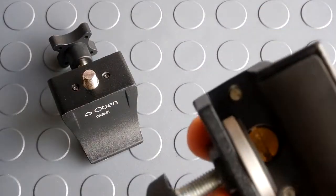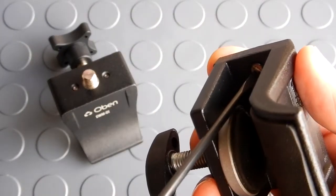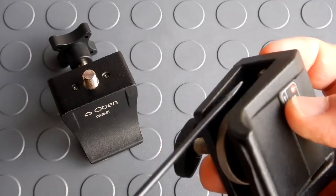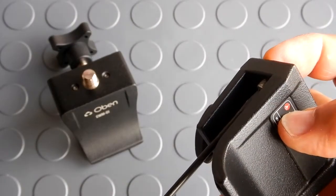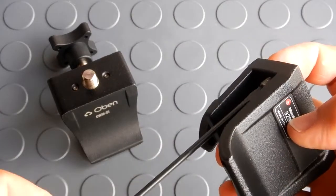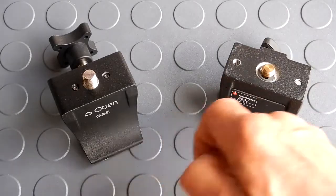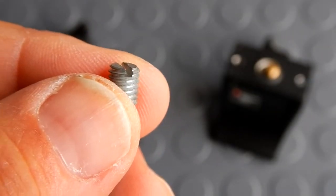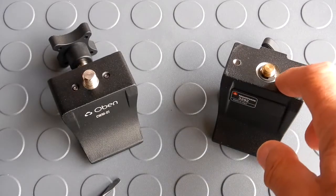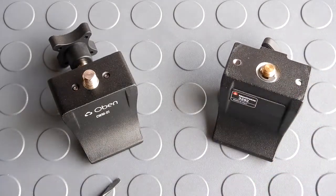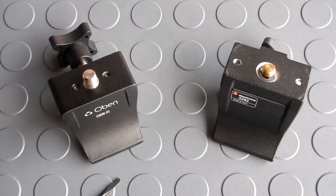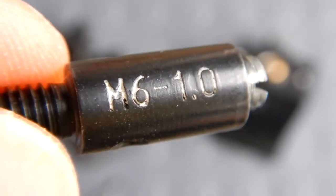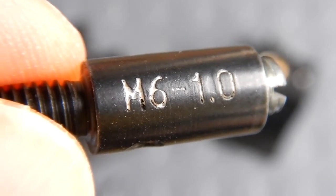The Manfrotto on the other hand uses a slotted screw in which you have to use a screwdriver like this. And I gotta tell you, if I ever had the opportunity where I had a ball head that was big enough, I would definitely change this to the allen head socket cap screws - much easier to use. And interestingly enough, the Manfrotto uses the exact same thread: an M6 by 1.0 pitch.